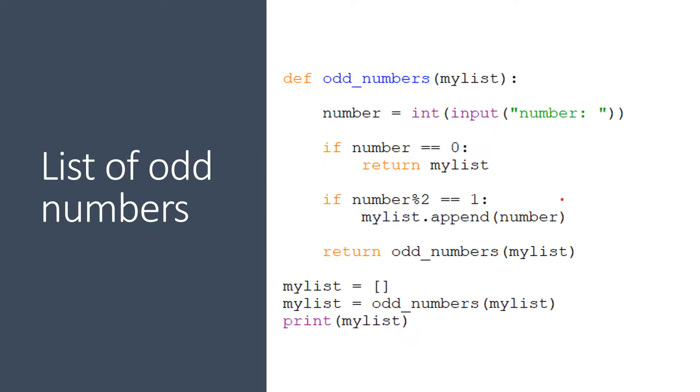So here is a recursive function which will print out a list of all the odd numbers entered by the user and it's called from the main program. If you haven't written this yet, simply copy this function now.